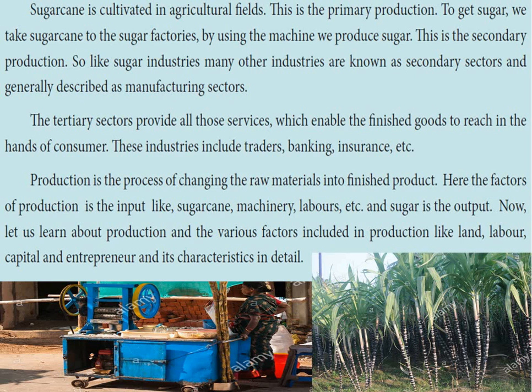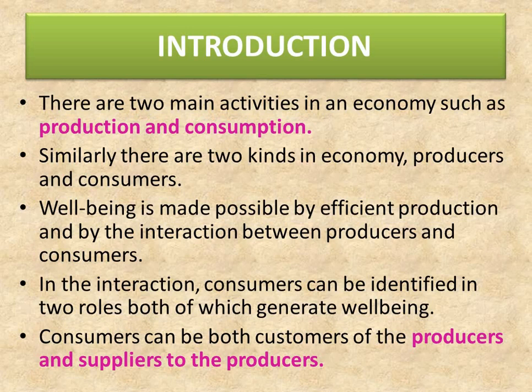Now, what is production? Production is the process of changing the raw materials into finished products. The factors of production are the inputs — like sugar cane, machinery, labour, etc. — and sugar is the output. We will learn about the various factors included in production: land, labour, capital, and entrepreneur, and their characteristics in detail.